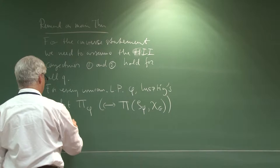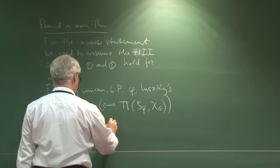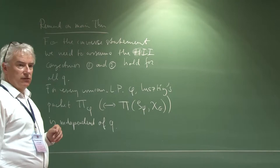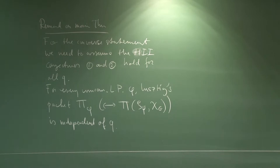This packet is independent of Q. This is something special to the unipotent representations — there are no bad primes for unipotent representations at all. So the theory is uniform in Q, and you can treat Q as a formal parameter.